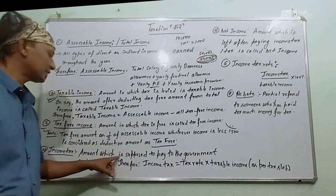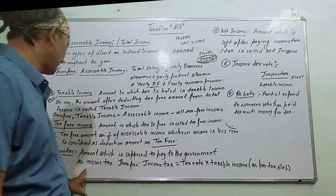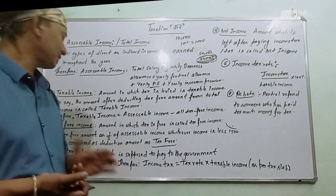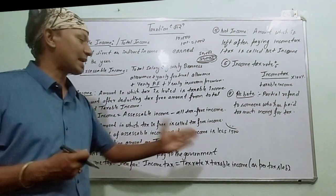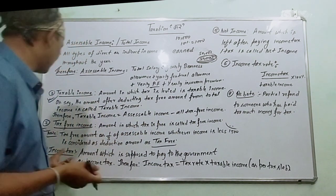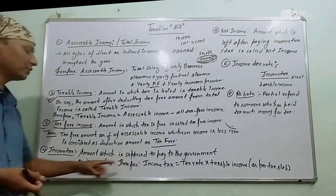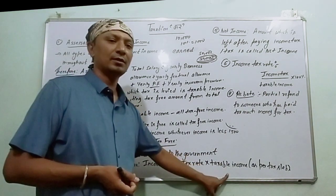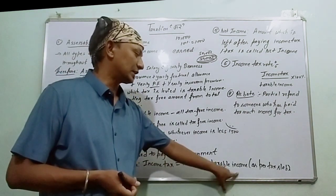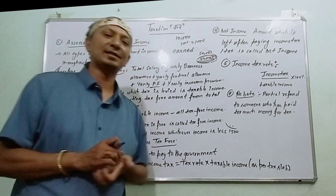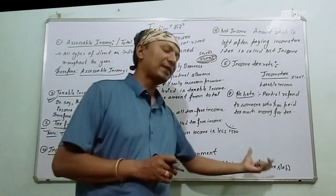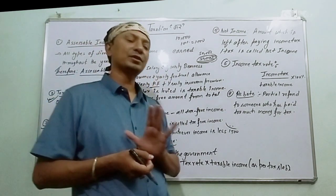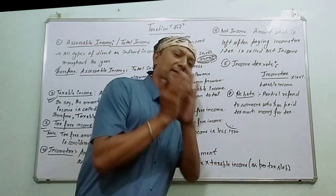Number 4 is Income Tax — the amount which is supposed to be paid to the government as income tax. Therefore, Income Tax equals tax rate multiplied by taxable income, as per the tax slab. As per the tax slab, different amounts are taxed at 1% or 10%, which you can refer to in the book.